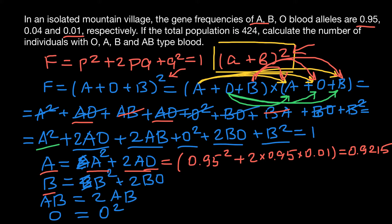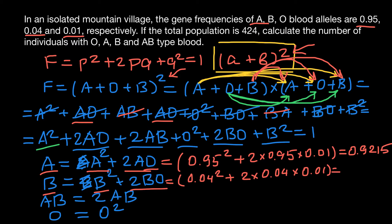Next, the frequency of blood group B is made by genotypes BB and BO: 0.04² plus 2 × 0.04 × 0.01, which gives a frequency of approximately 0.0024.